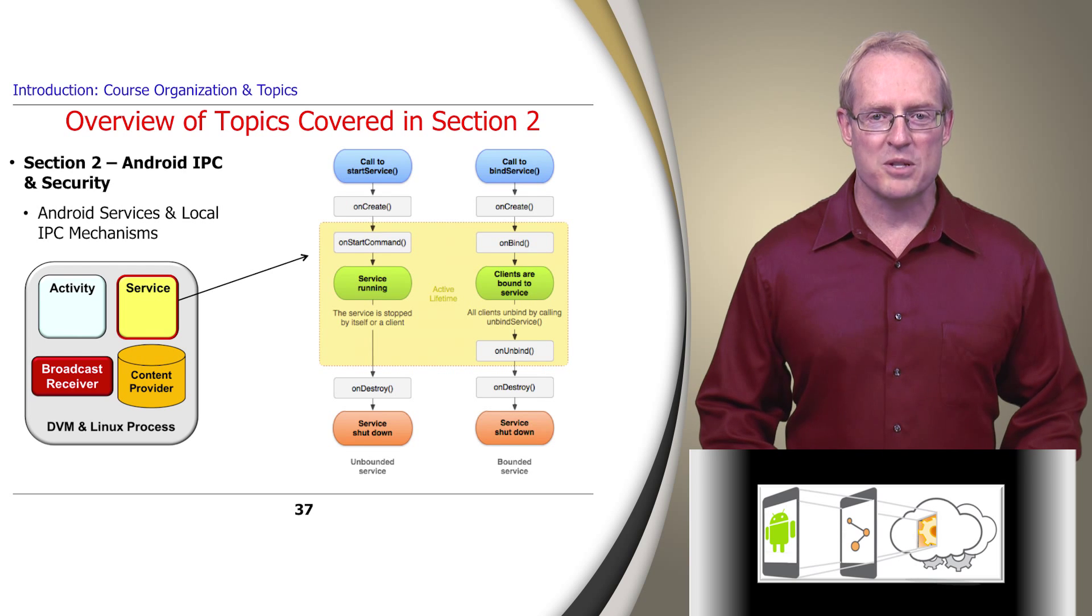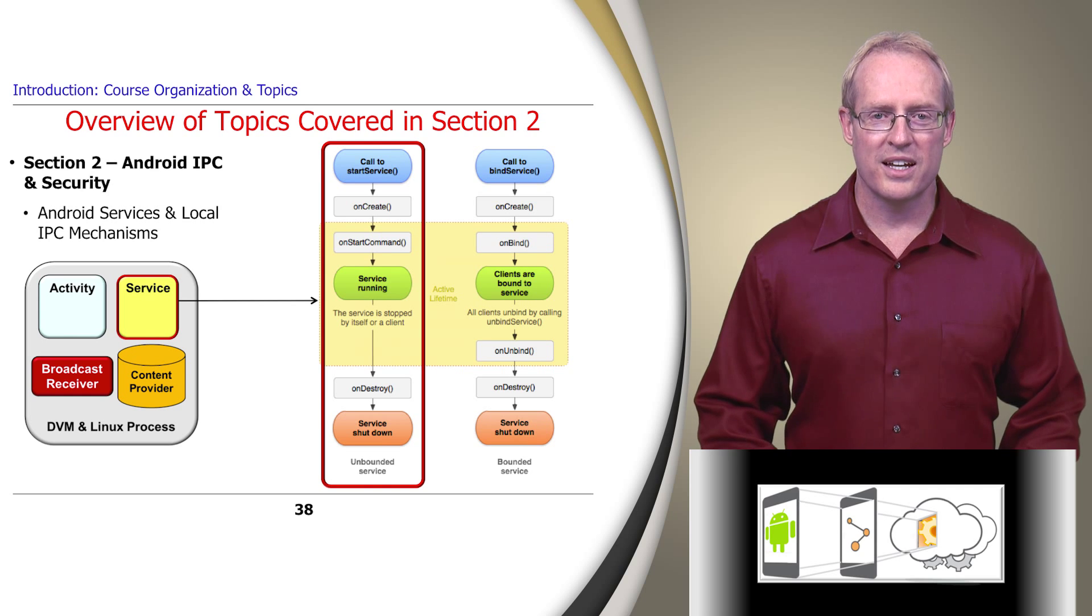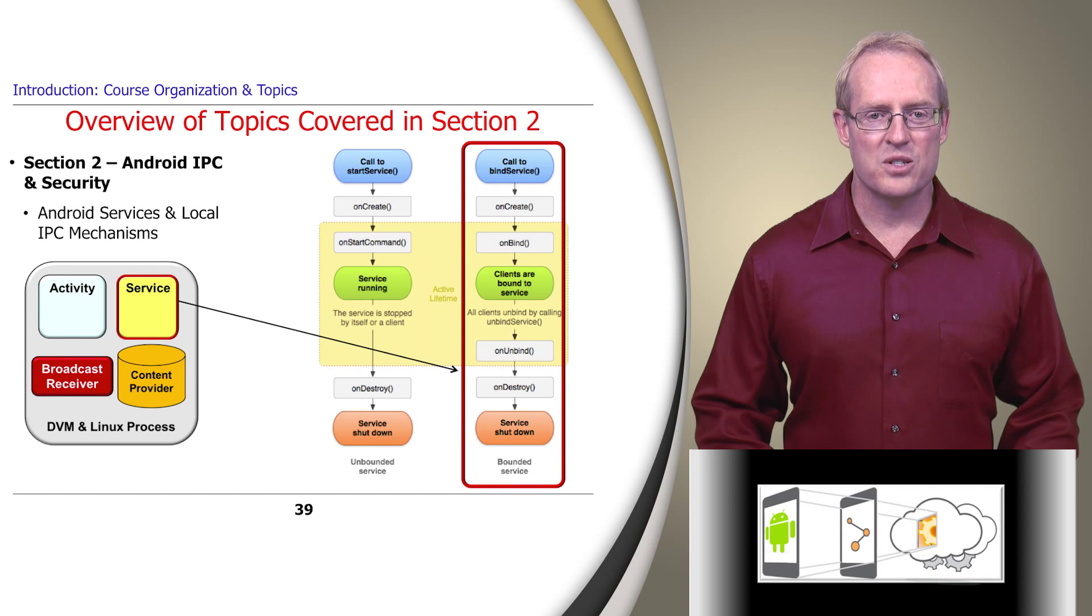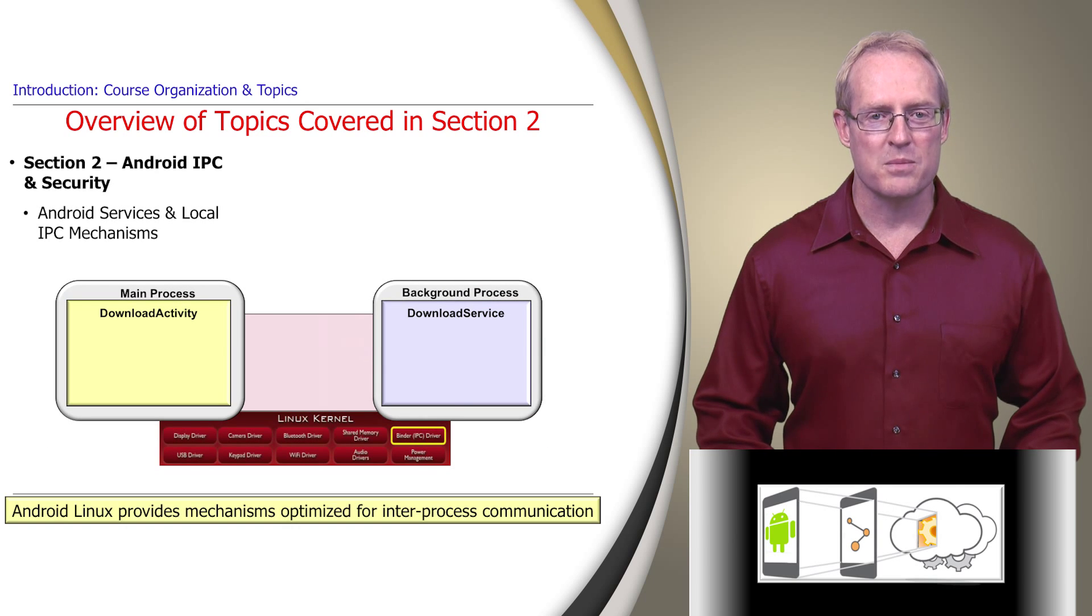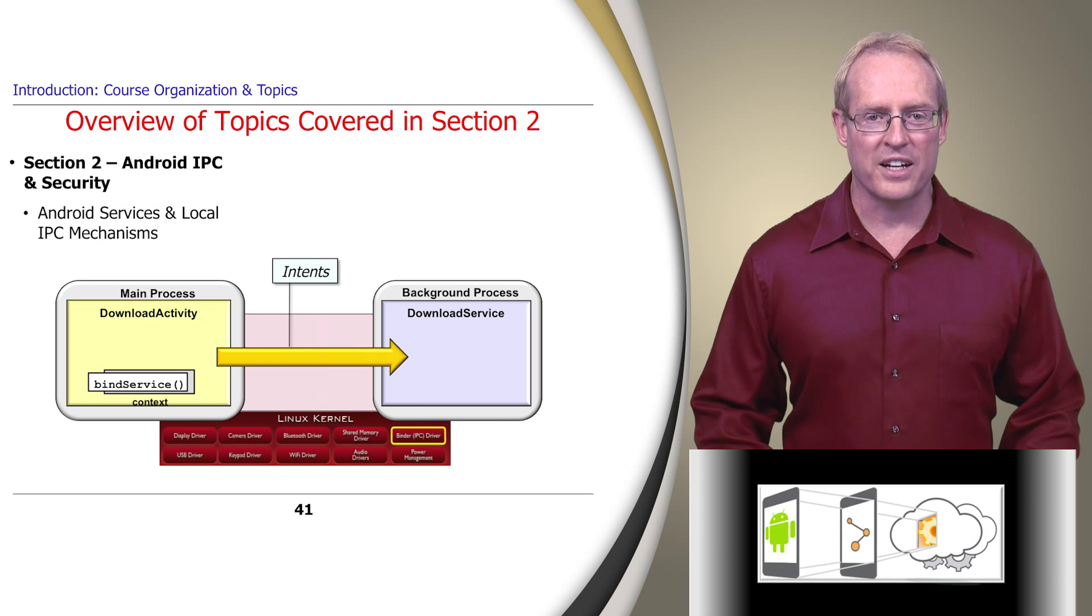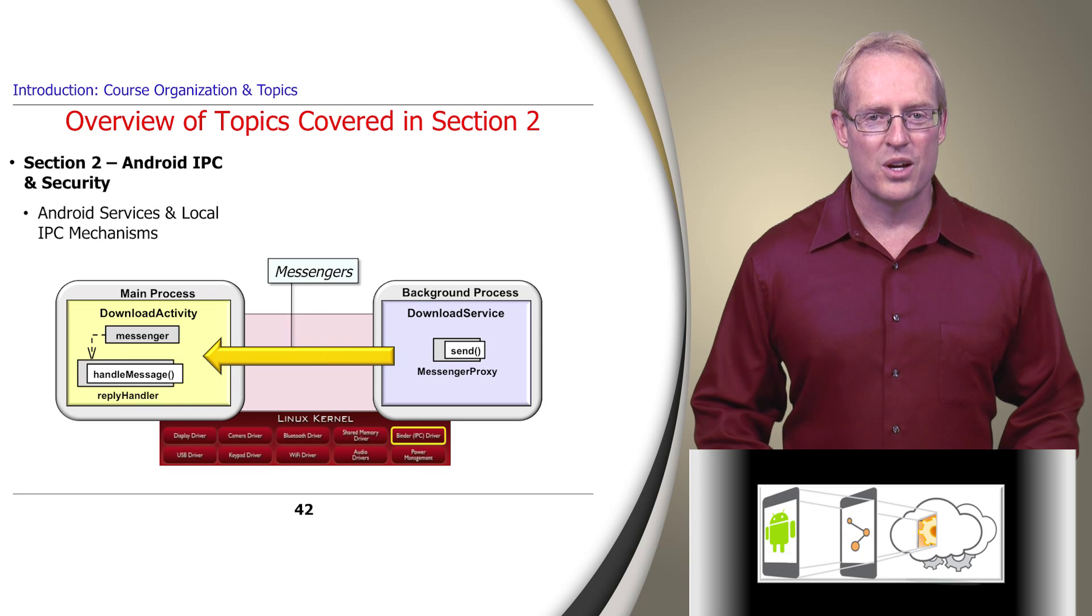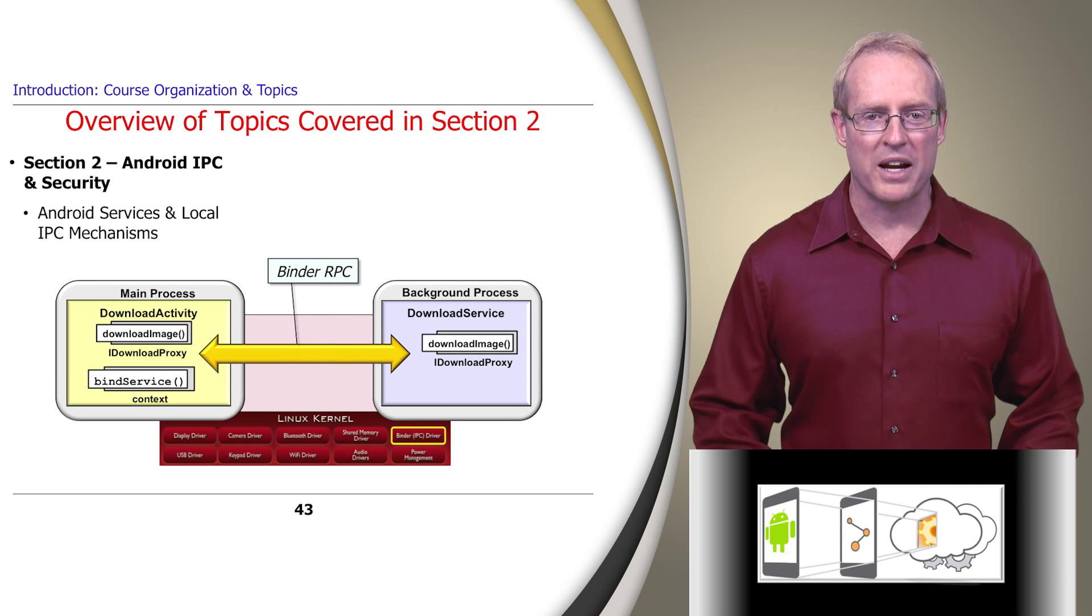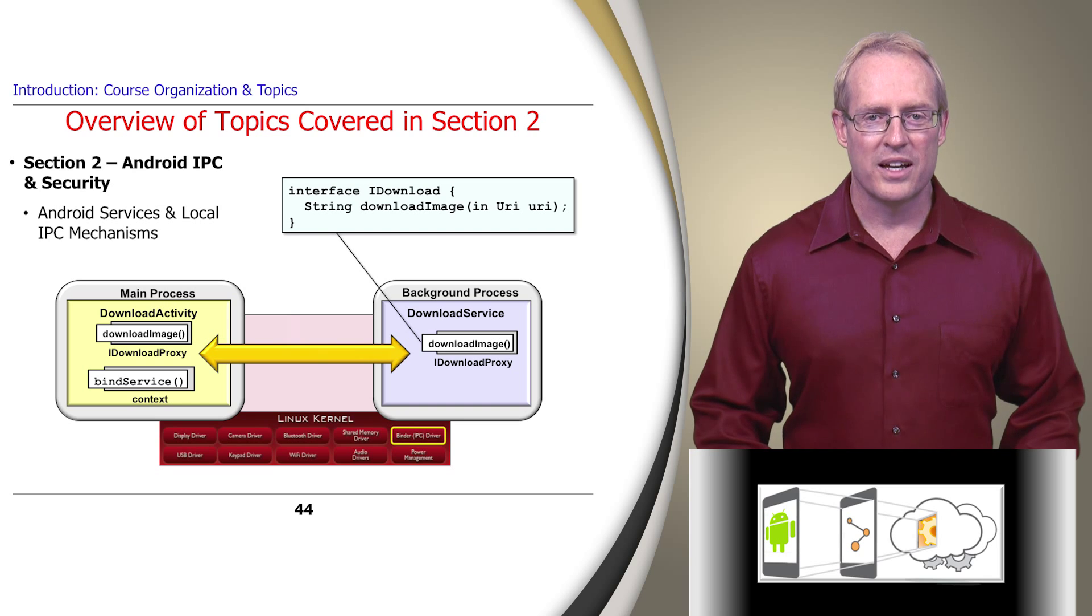This section examines several types of Android services, including started services, that usually perform a single operation, and bound services, that allow clients to conduct longer conversations with service implementations. Activities and services interact via mechanisms that are optimized for inter-process communication within a mobile device. We cover several Android inter-process communication mechanisms in section 2, including intents, which are passed when an activity or service is started, and messengers, which enable message-based communication across processes. We also cover the binder object-oriented remote procedure call mechanism, and the Android interface definition language, that simplifies Java application access to the binder communication capabilities.